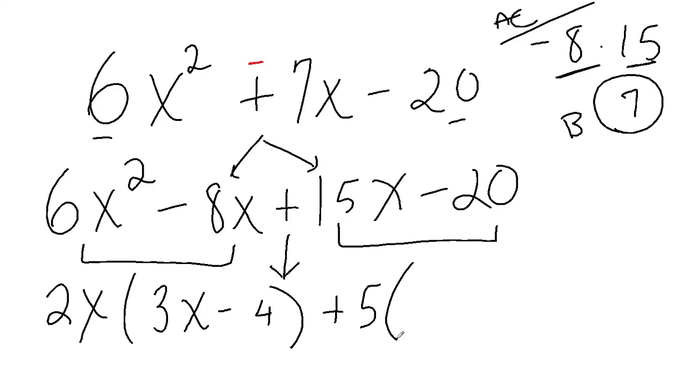and that gives me 3x minus 4. So remember what we said. If you do it right, and there is actually a combination that works, these binomials will match. That tells you one of your factors, 3x minus 4, and 2x plus 5.